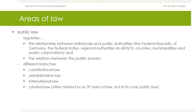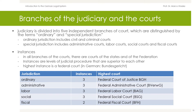In Germany, the judiciary is divided into five independent branches of court, which are distinguished by the terms ordinary and special jurisdiction. Ordinary jurisdiction includes civil and criminal courts, while special jurisdiction includes administrative courts, labor courts, social courts, and fiscal courts. The term ordinary jurisdiction is historically explained by the fact that in the past only the civil and criminal courts were staffed with independent judges.